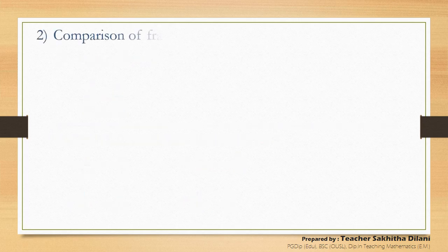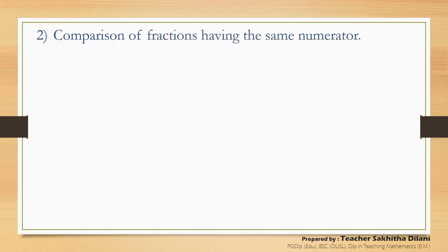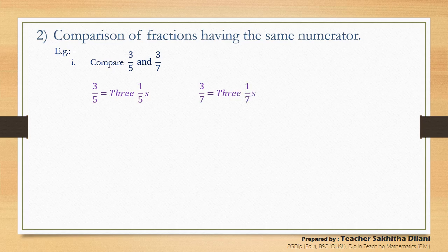Let's learn the second type: comparison of fractions having the same numerator. You are given an example — compare three-fifths and three-sevenths. You can see that in these two fractions the numerators are equal, that means they have the same numerator. You can express three-fifths as three one-fifths and three-sevenths as three one-sevenths. We learned that the fraction with the smaller denominator is the largest fraction, so one-fifth is greater than one-seventh. Since one-fifth is greater than one-seventh, three-fifths is greater than three-sevenths.